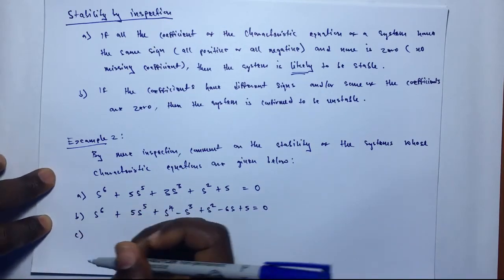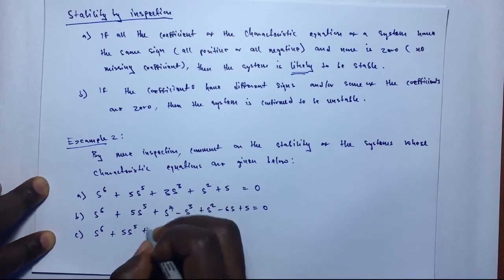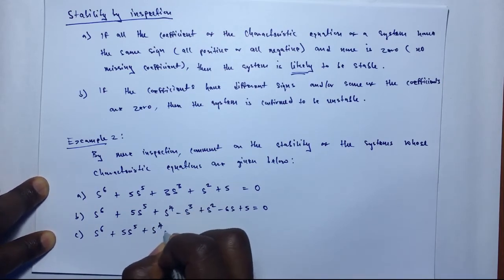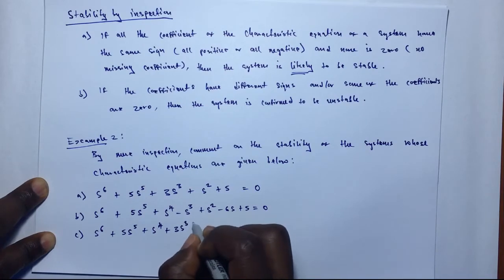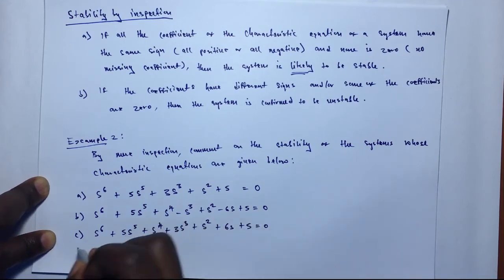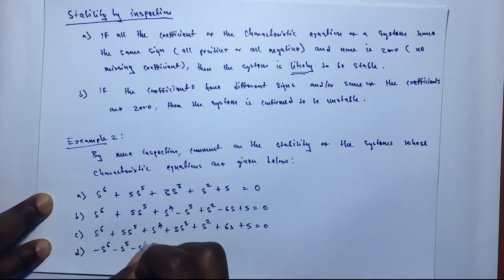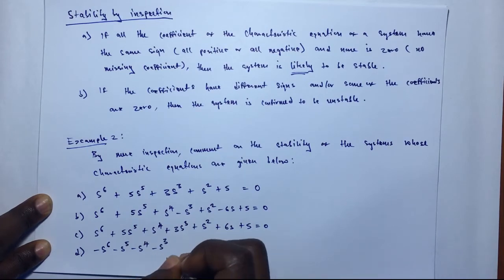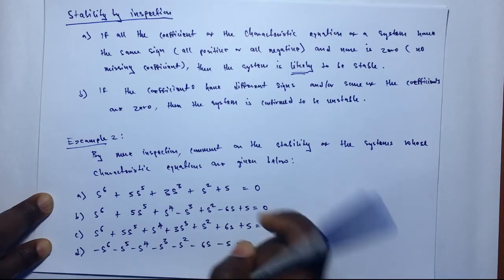System C: s⁶ + 5s⁵ + s⁴ + 3s³ + s² + 6s + 5 = 0. System D: −s⁶ − s⁵ − s⁴ − s³ − s² − 6s − 5 = 0.